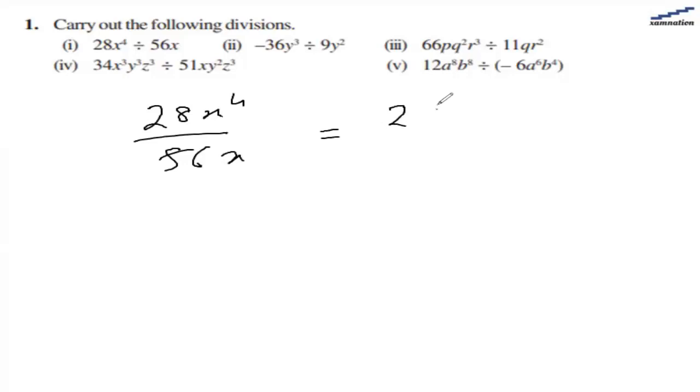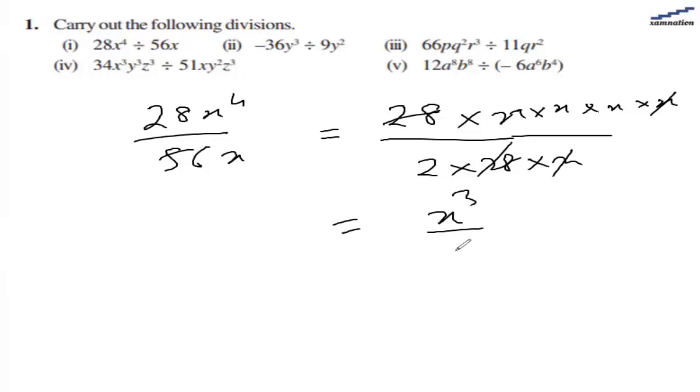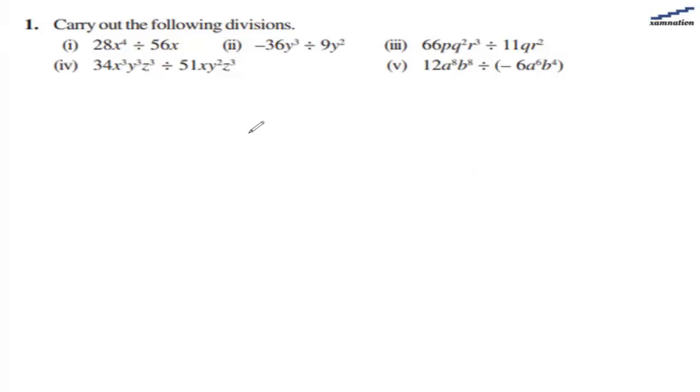Let's write the numerator with x coming 4 times, and we have 2 multiplied by 28, then x in the denominator. 28 and 28 get cancelled, and x gets cancelled. In the numerator we are left with x cubed, and in the denominator we are left with 2. So the final answer is x cubed by 2.